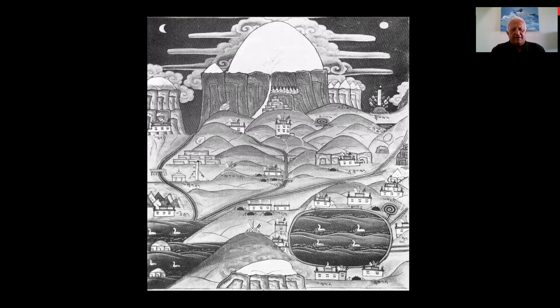Looking at this picture of Kailash, you'll find different rivers originating from it. Four major rivers that supply water to India come from Kailash, which is why it is considered very holy. To the west goes the Indus or Sindhu Nadi, to the northwest comes Satlaj, to the south comes Karnali, and to the north is the river Sangpo — simply meaning 'the river' in Tibetan.